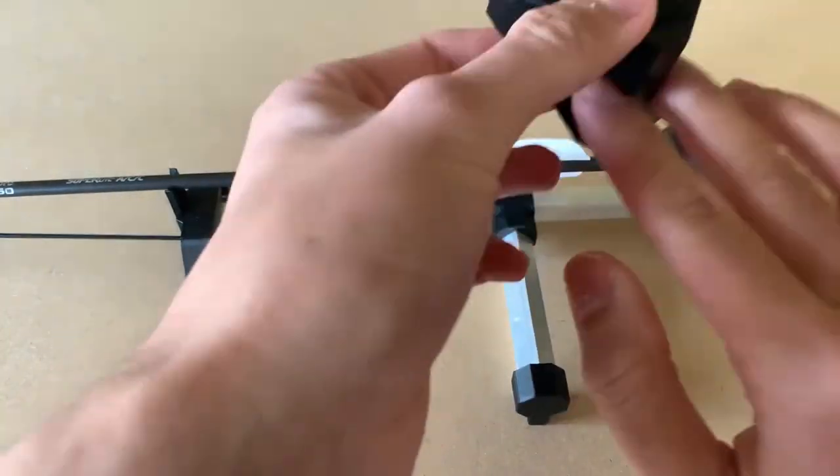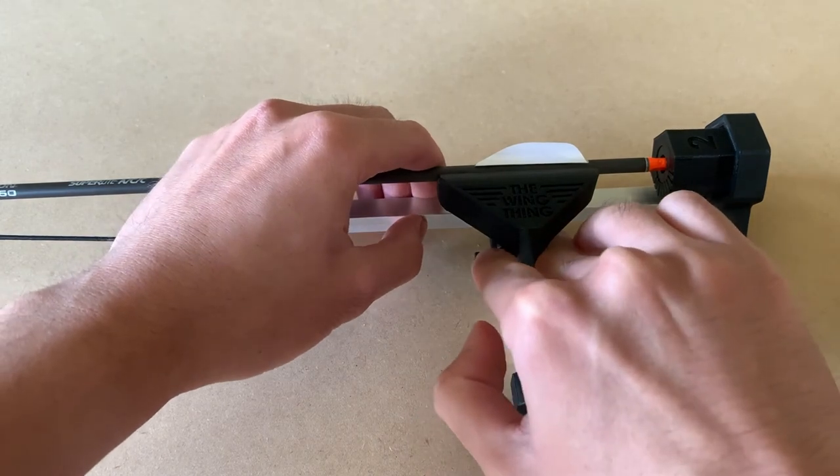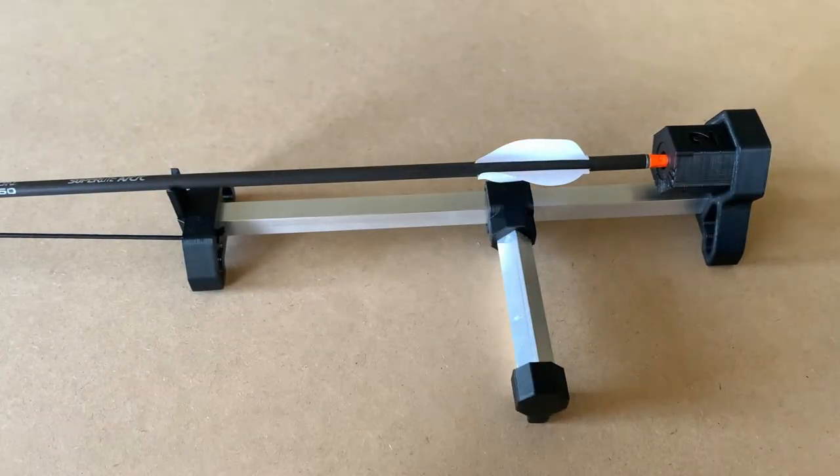Number two. Again, pushing into the shaft firmly and pulling back slowly, and that will do all three fletches.